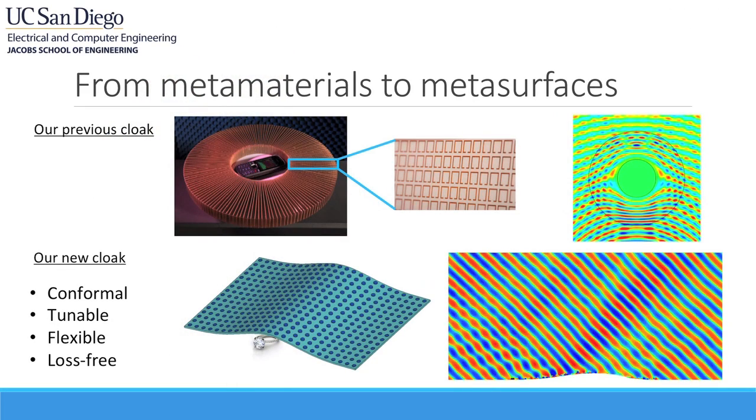Recent exciting results have shown that we can have a great degree of control over light just using these two-dimensional systems. Cloaking is of great importance in manipulating electromagnetic waves — and not only waves, it can be extended to acoustic and other fields as well.